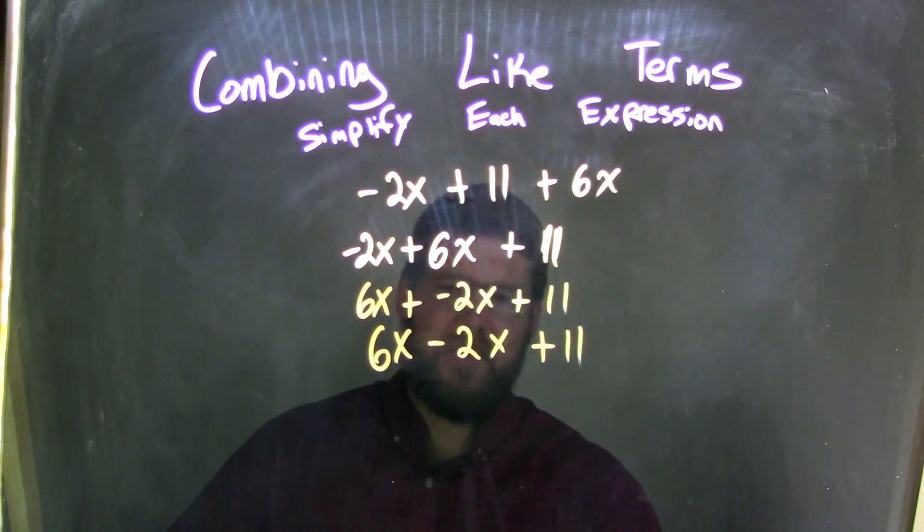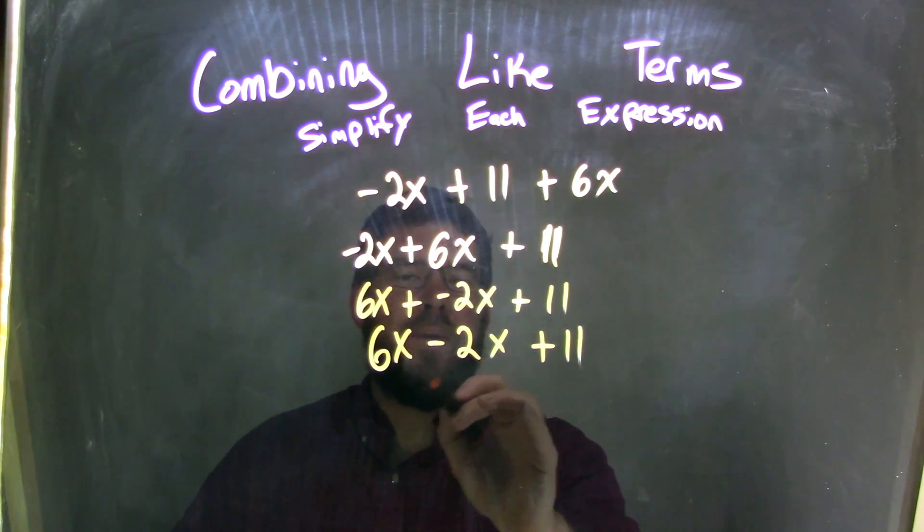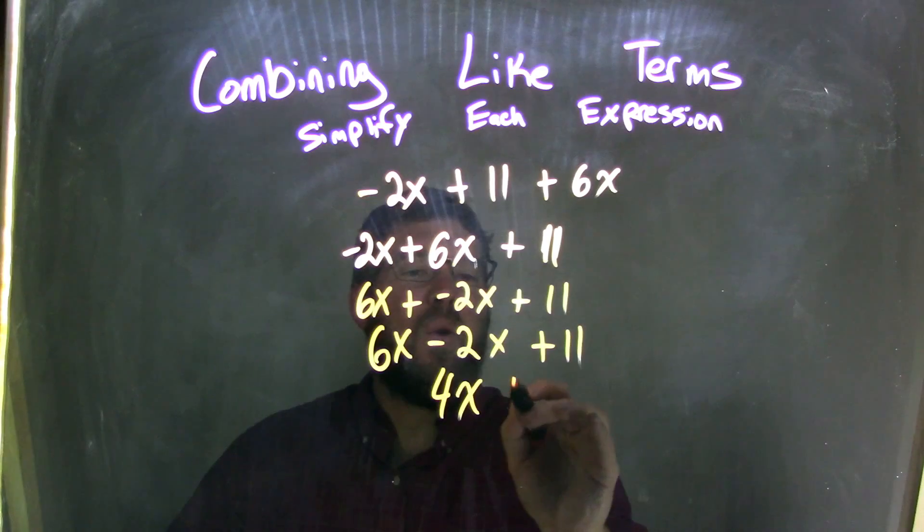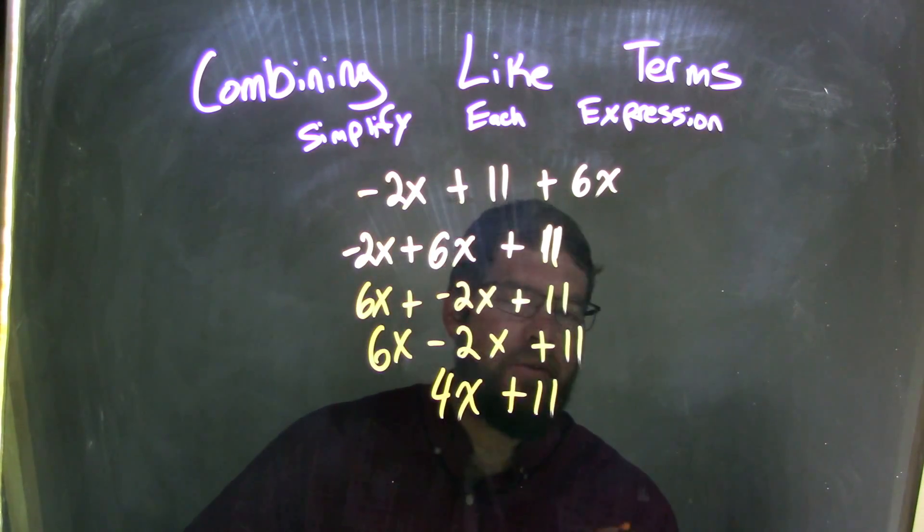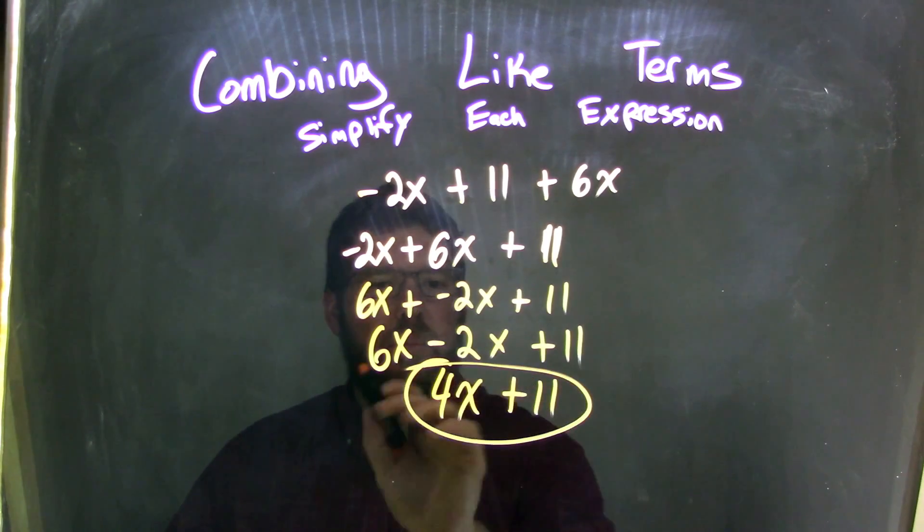And now, hopefully it's easier to see, 6x minus 2x is just 4x. And the whole time, I'm bringing down the plus 11, because there's no other like term to add it to. And now, our final answer is 4x plus 11.